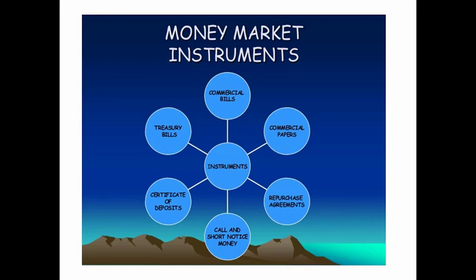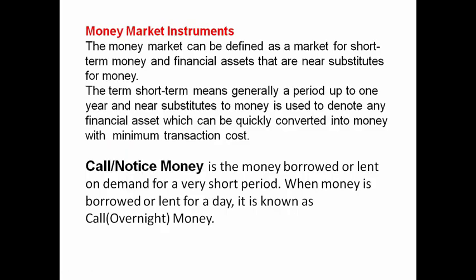Next, money market instruments. We have six types: call and short notice money, certificate of deposit, treasury bills, commercial bills, commercial papers, and repurchase agreements. The money market is defined as a market for short-term money and financial assets that are near substitutes for money. Short-term means generally a period up to one year, and near substitutes for money denote financial assets that can be quickly converted into money with minimum transaction cost.